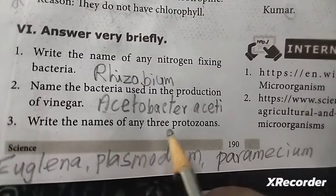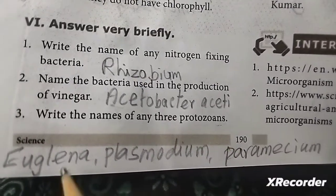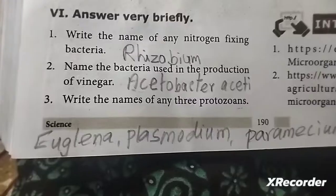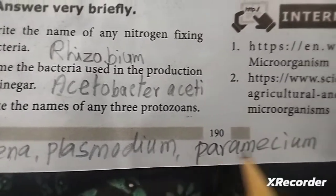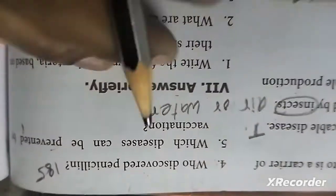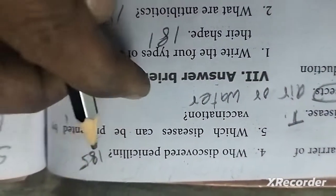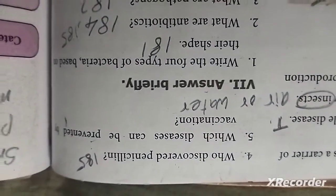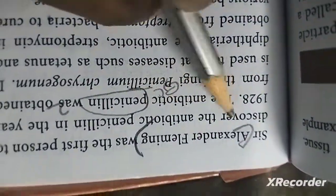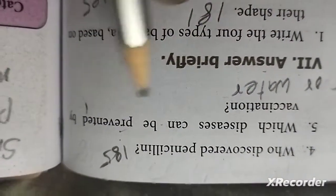Third: write the names of any three protozoans - euglena, plasmodium, paramecium. Fourth question: who discovered penicillin? Alexander Fleming, page 185. Next: which disease can be prevented with vaccination? Smallpox, polio, measles, mumps, rubella.